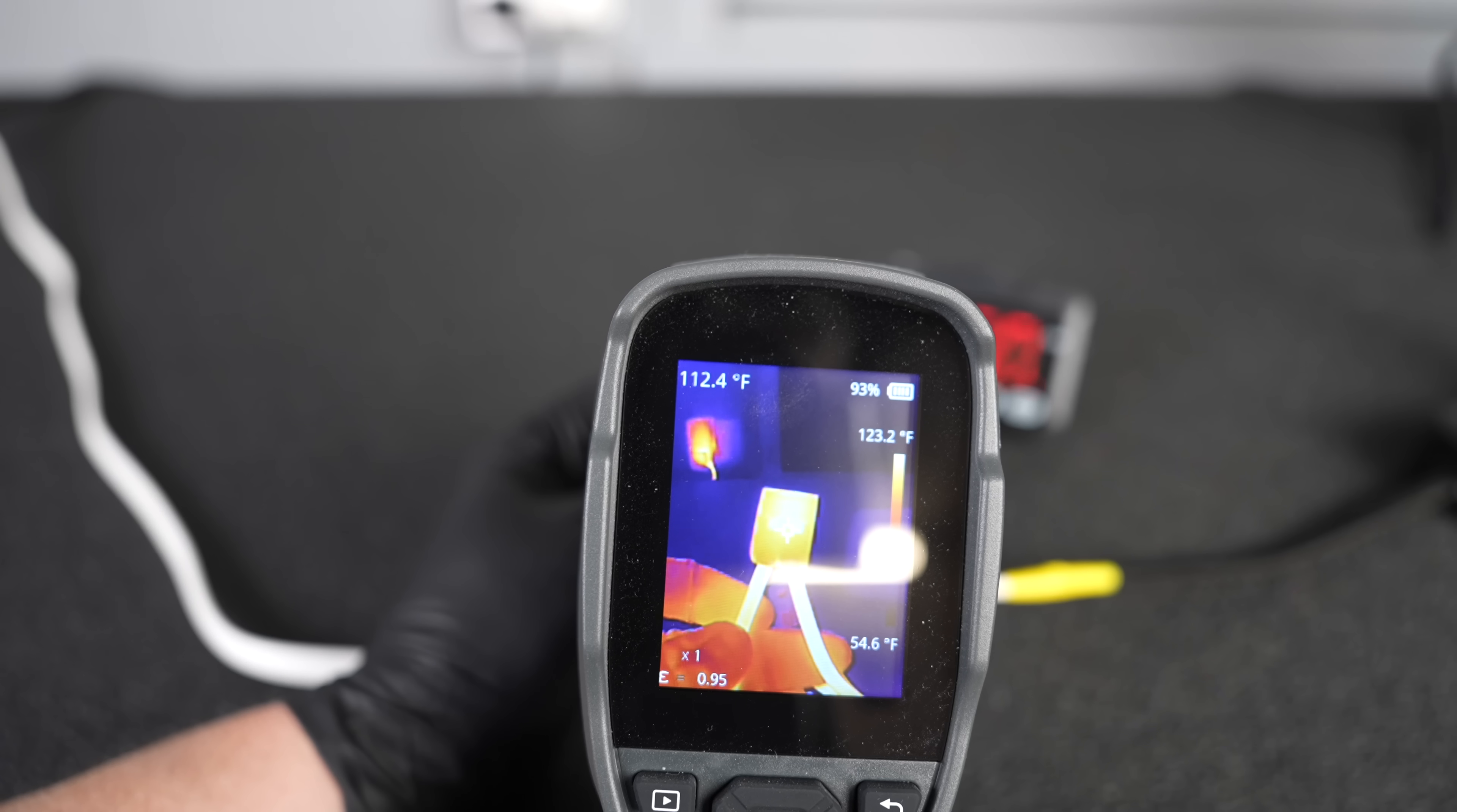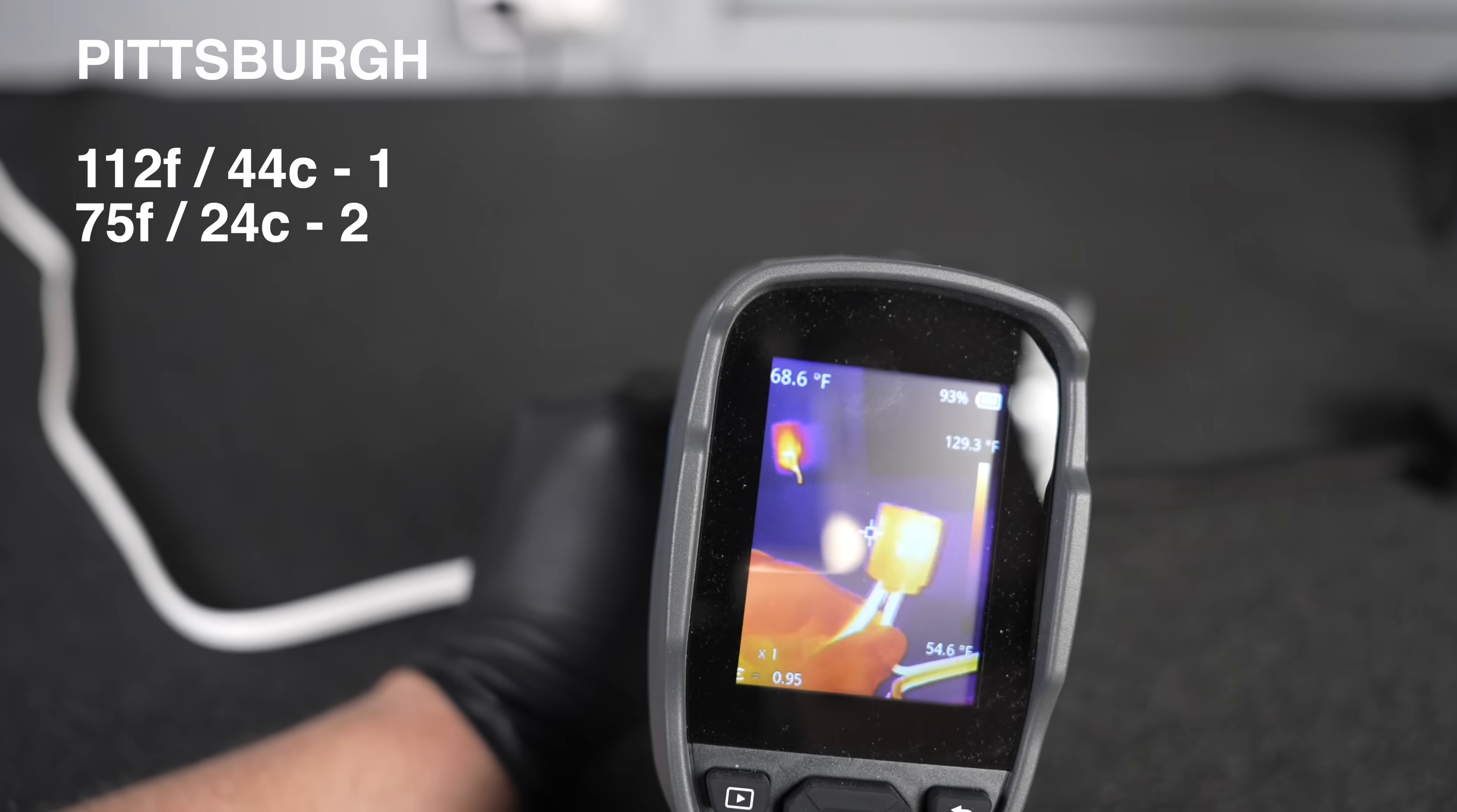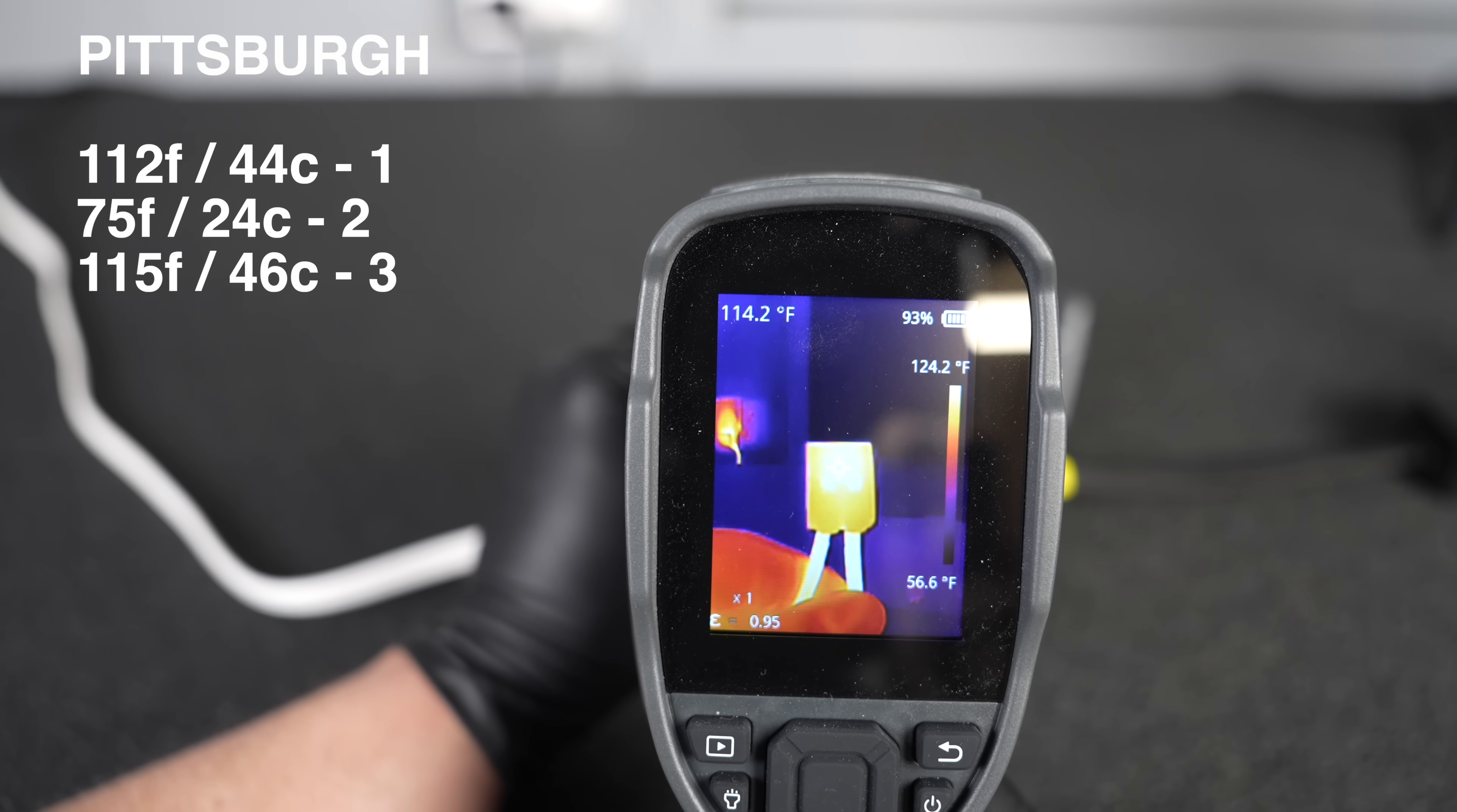On connection one we're reading 112 degrees Fahrenheit or 44 degrees Celsius. Our ground connector is reading 75 degrees Fahrenheit or 24 degrees Celsius. And lastly, our third connector is reading 115 degrees Fahrenheit or 46 degrees Celsius.